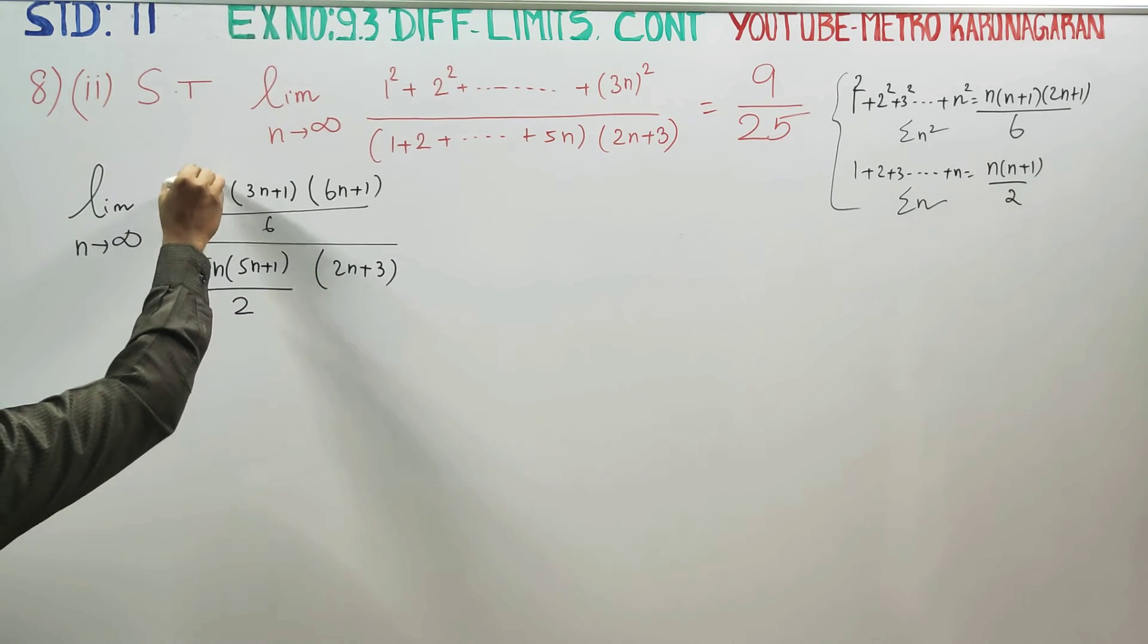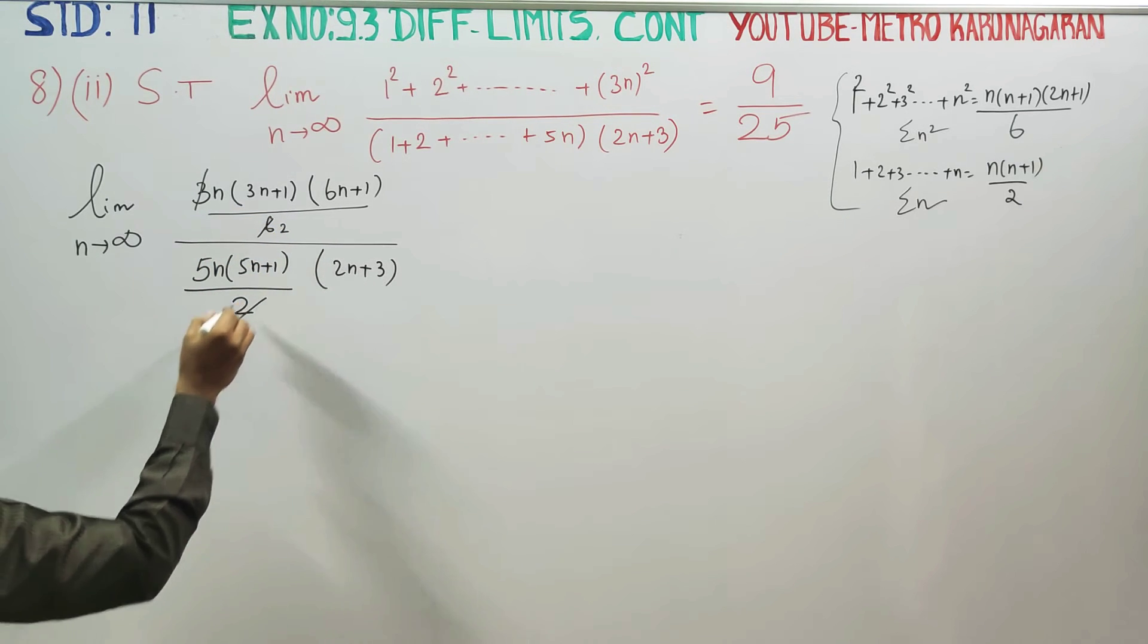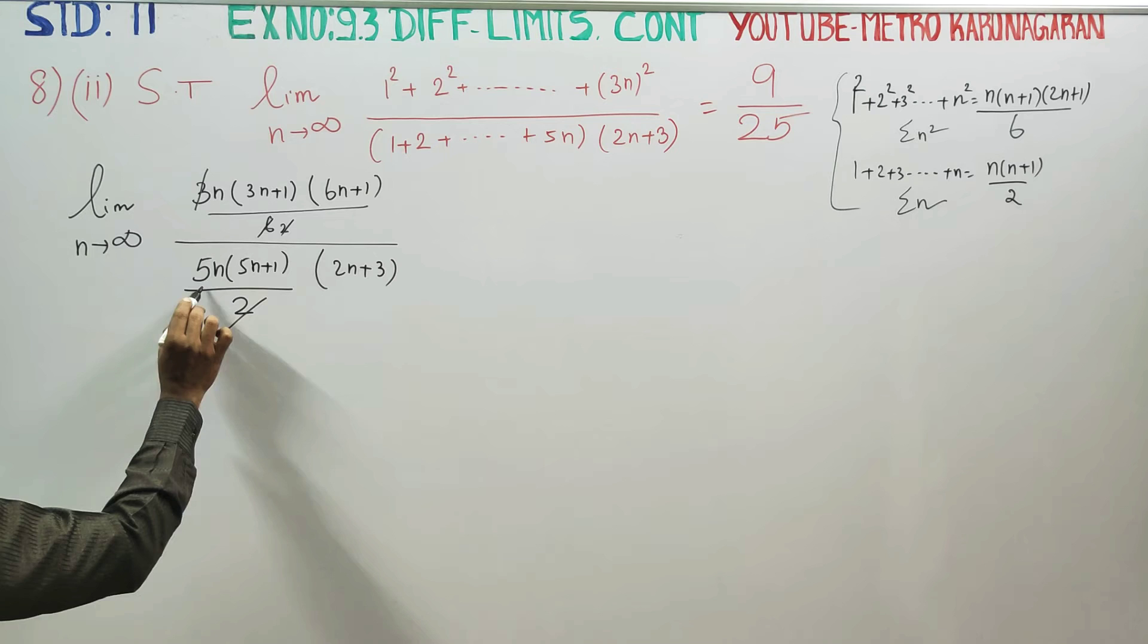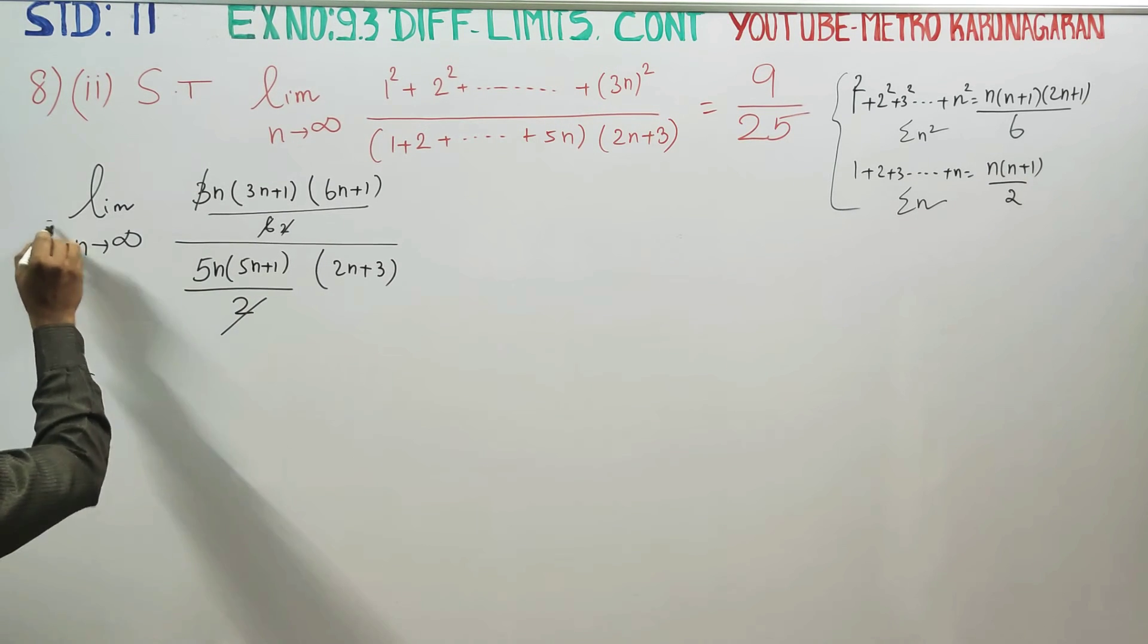Here 3 cancels, 2 times cancel. Denominator 2, 2 cancel. Balance 1 by 5 is 1 by 5.